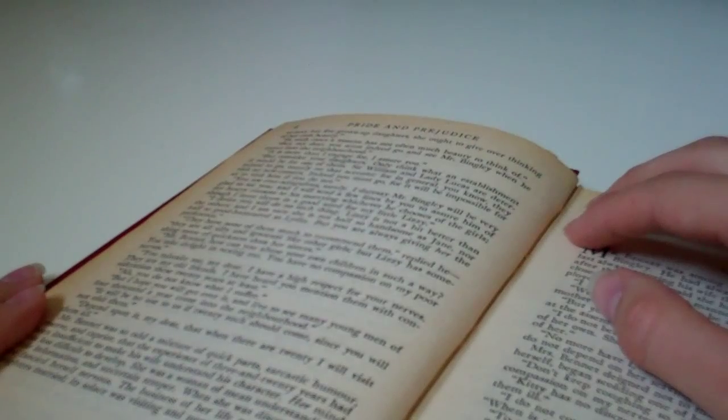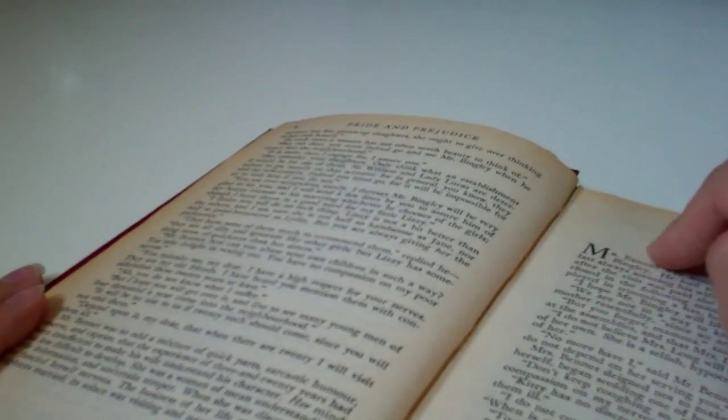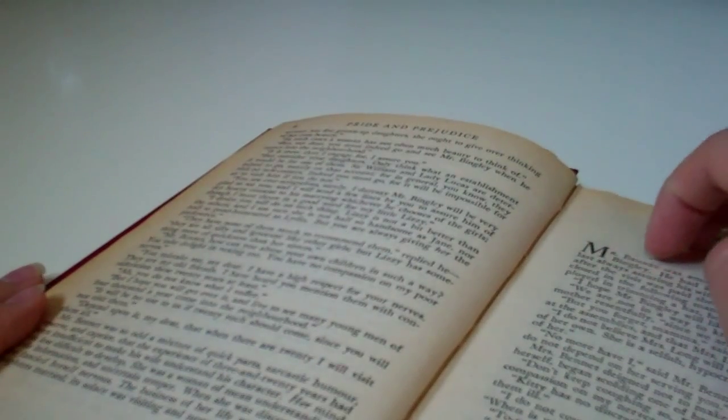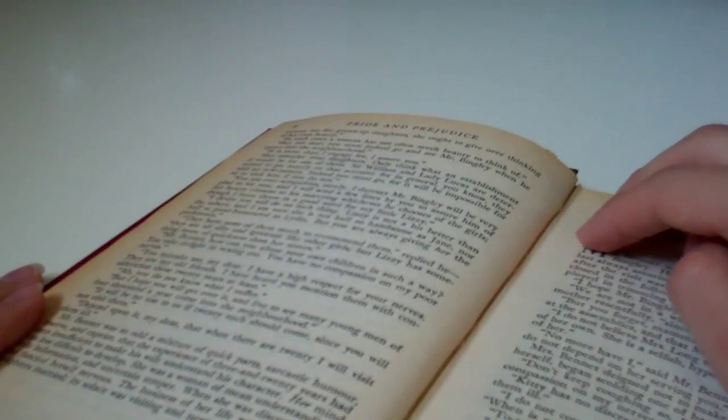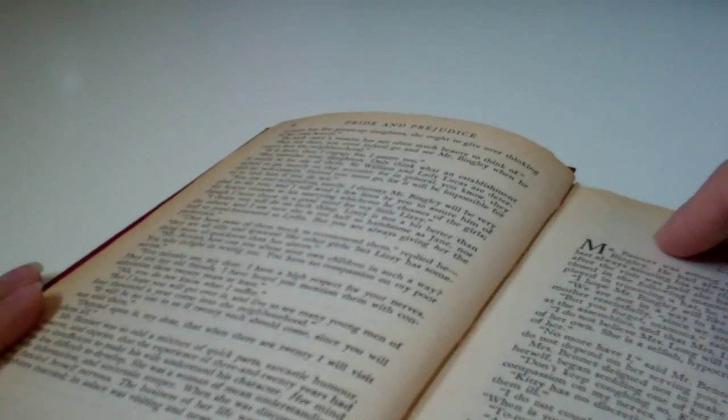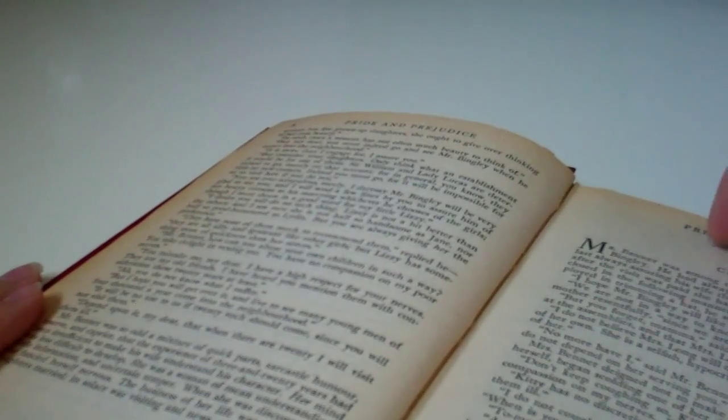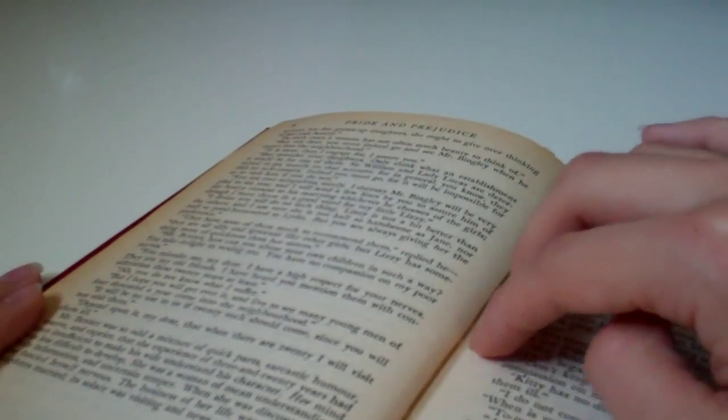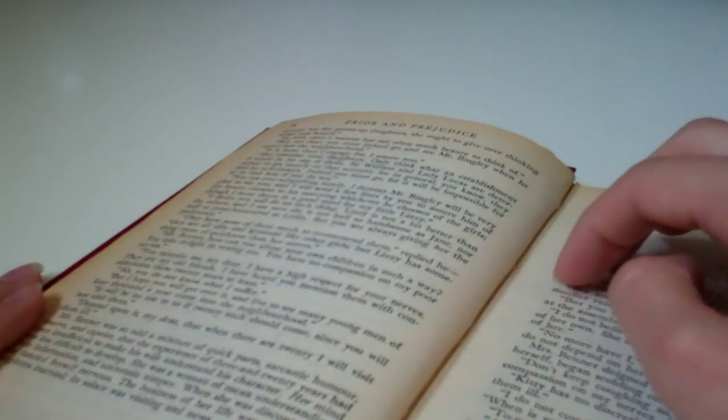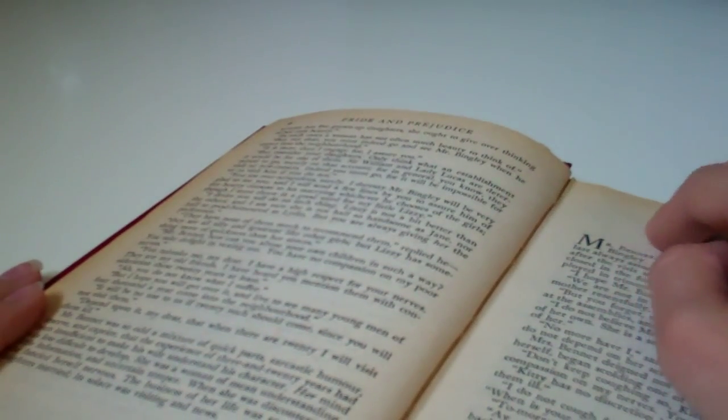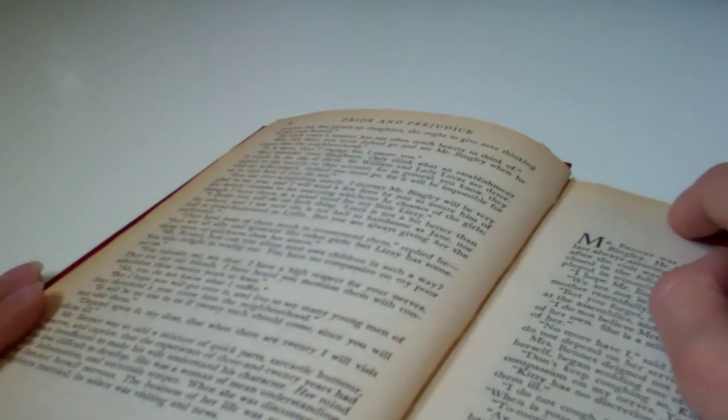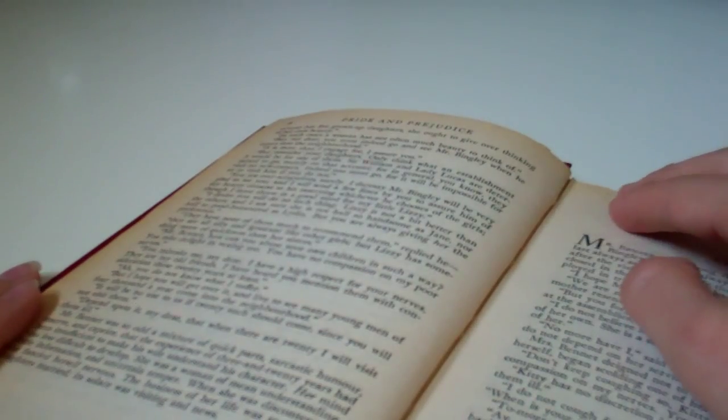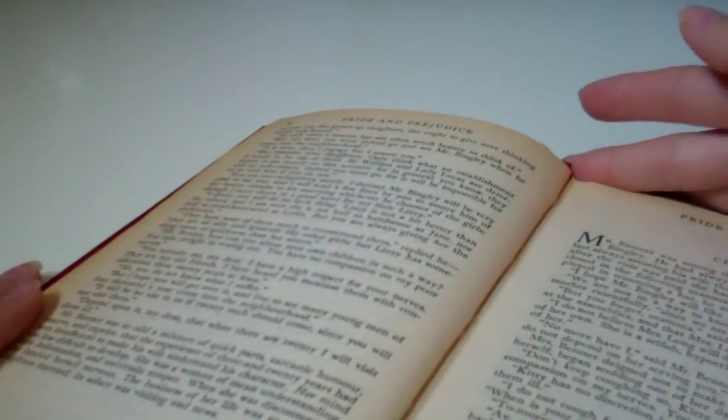You mistake me, my dear. I have a high respect for your nerves. They are my old friends. I have heard you mention them with consideration these twenty years at least. Ah, you do not know what I suffer. But I hope you will get over it and live to see many young men of four thousand a year come into the neighborhood. It will be no use to us if twenty such should come, since you will not visit them. Depend upon it, my dear, that when there are twenty, I will visit them all.